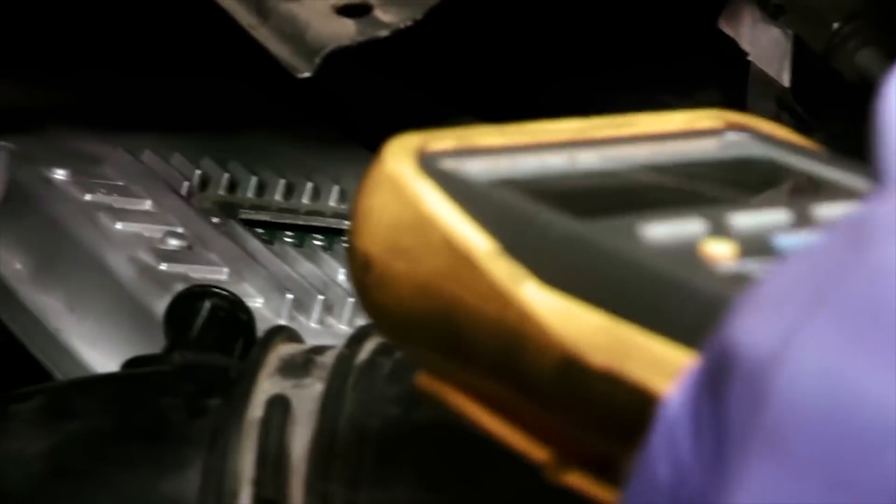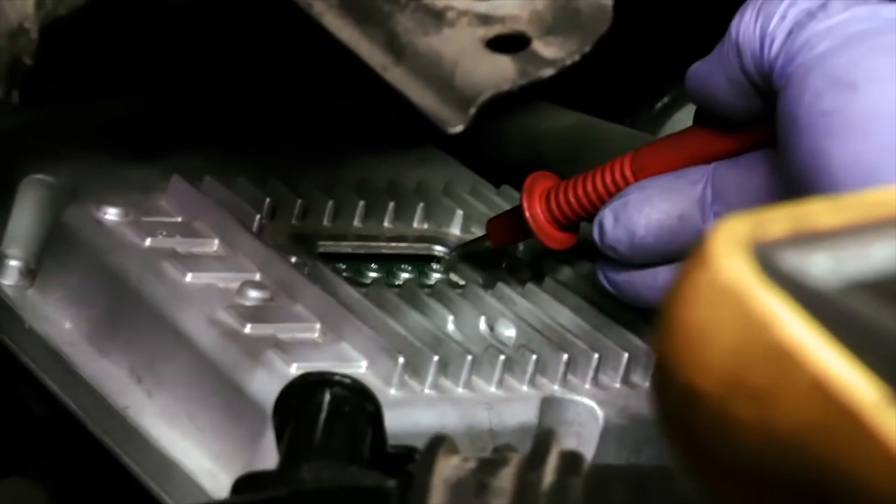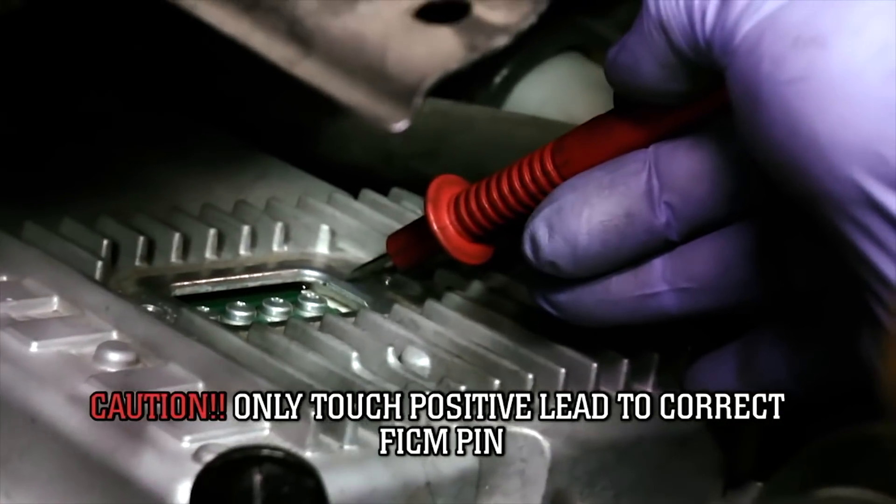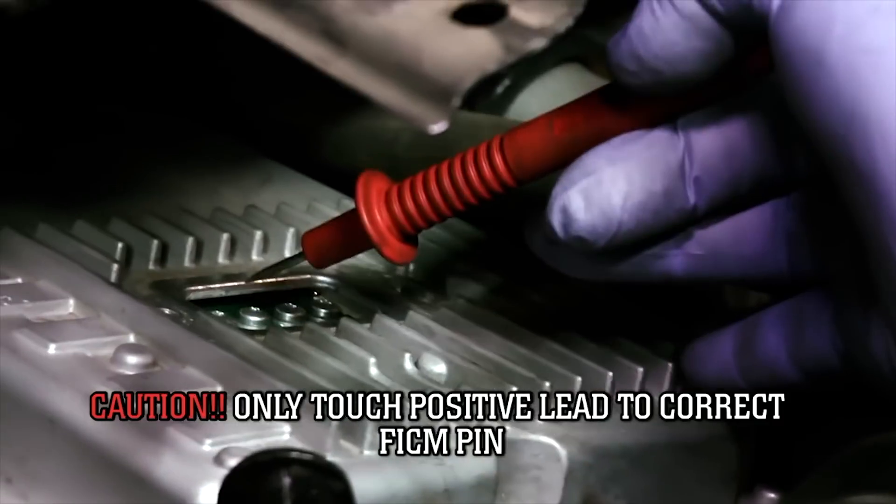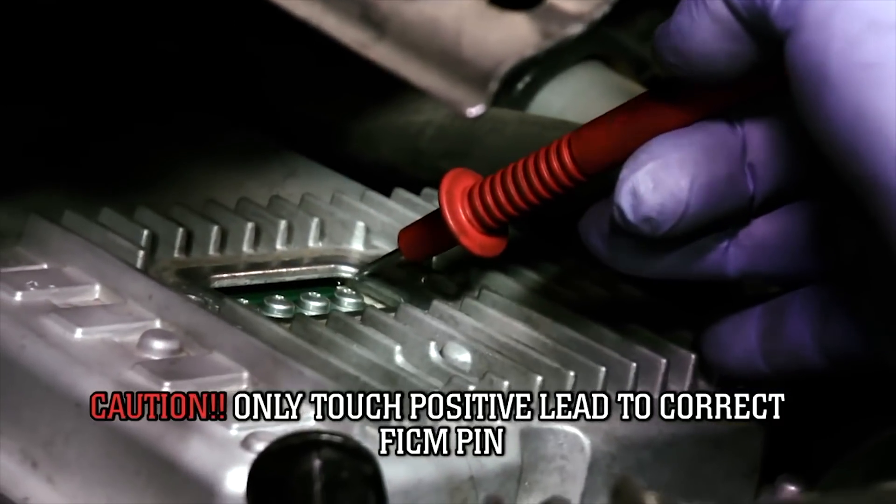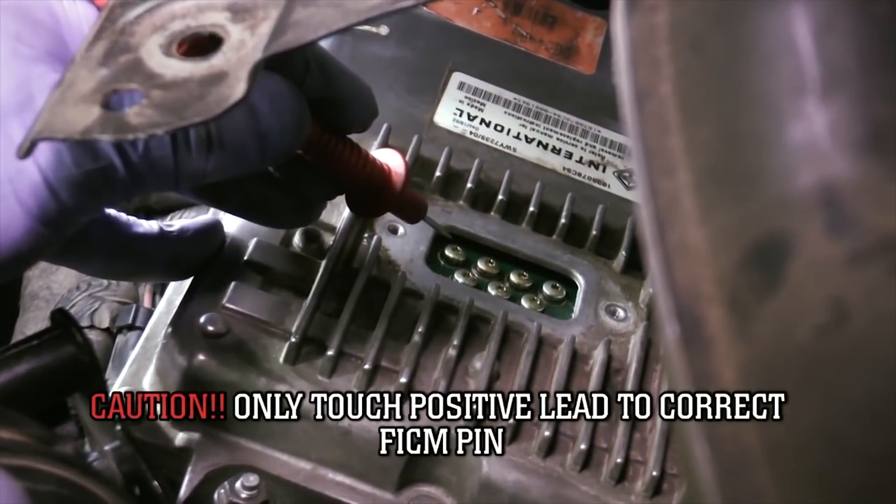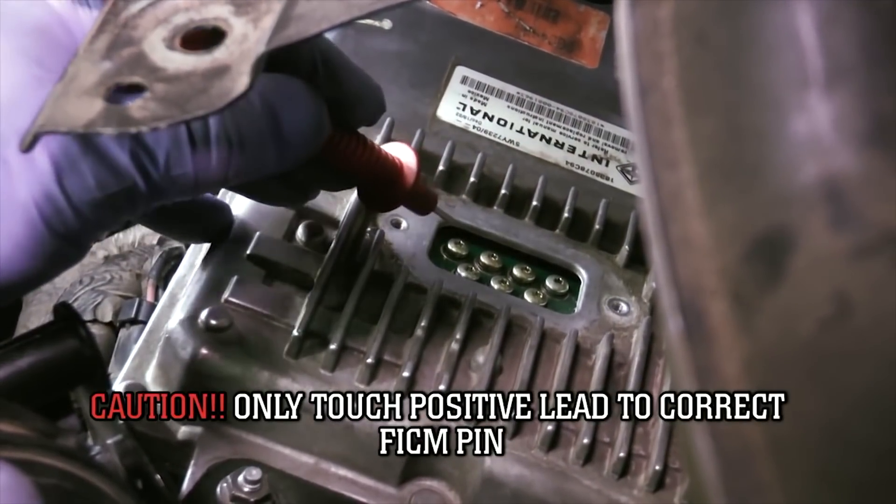To test the voltage on a 4-pin FICM, use a grounded voltmeter and touch to the outside pin under the FICM access panel, being careful not to touch the FICM casing itself. An assistant needs to turn the key to the on, not start position, at which point voltage can be read. For a 7-pin setup, repeat the steps, but touch the voltmeter to this pin.